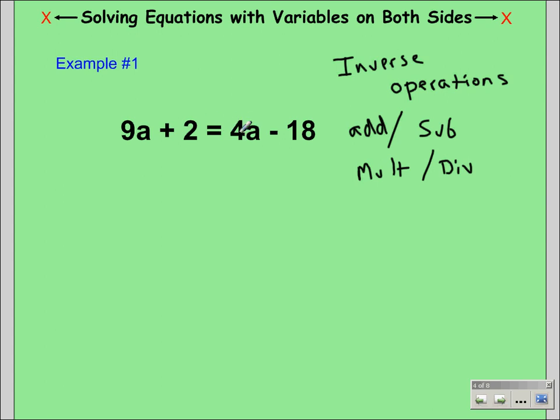If we are going to take our 4a and combine it with the 9a, we need to subtract 4a because 4a is positive. So to get rid of it we'll subtract 4a and do the same thing on the left side of our equation, leaving us with 5a plus 2 equals negative 18.